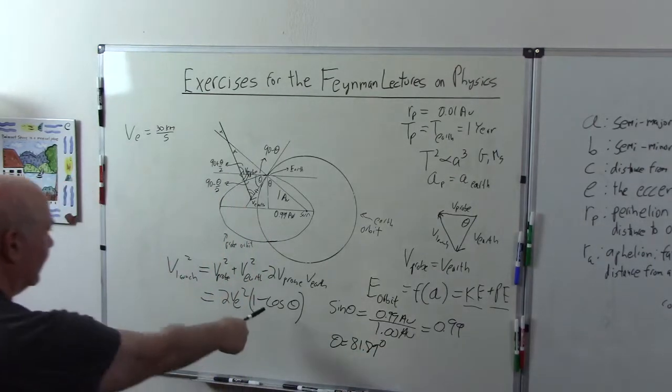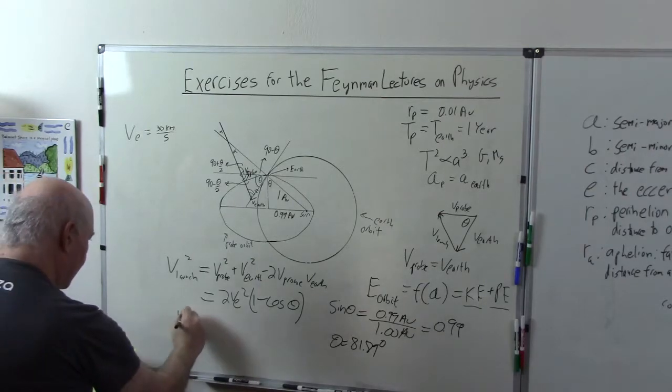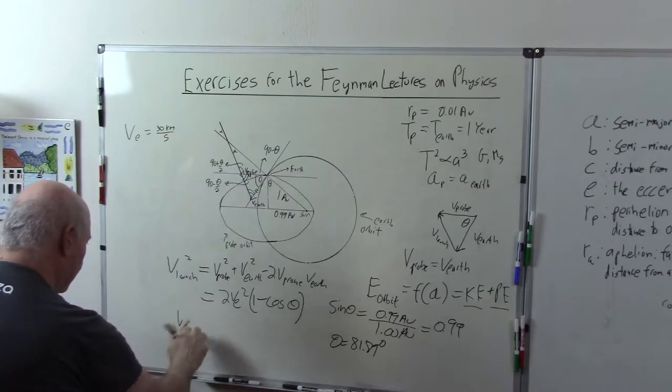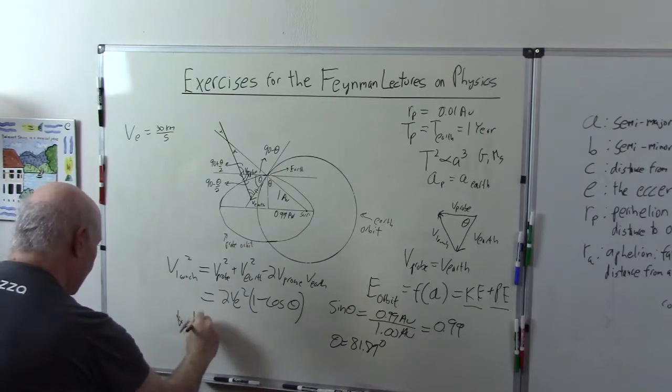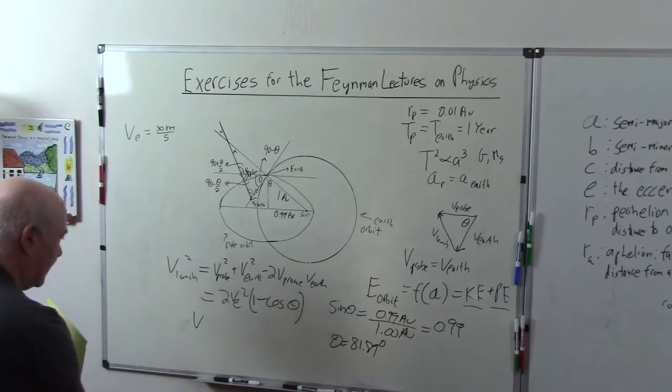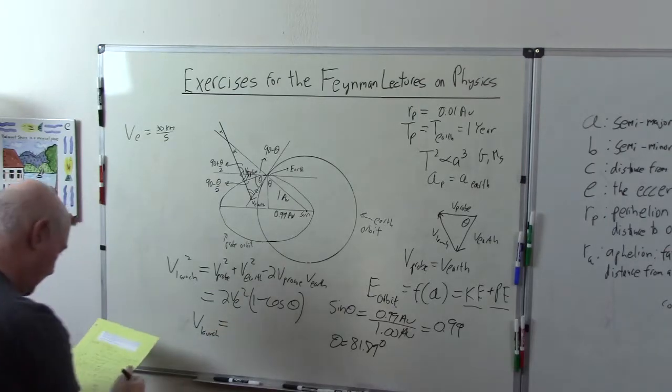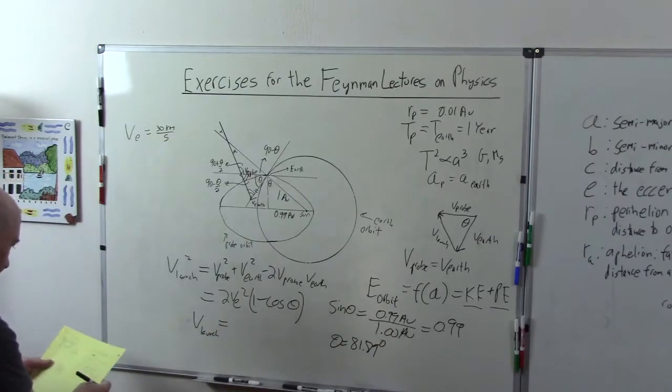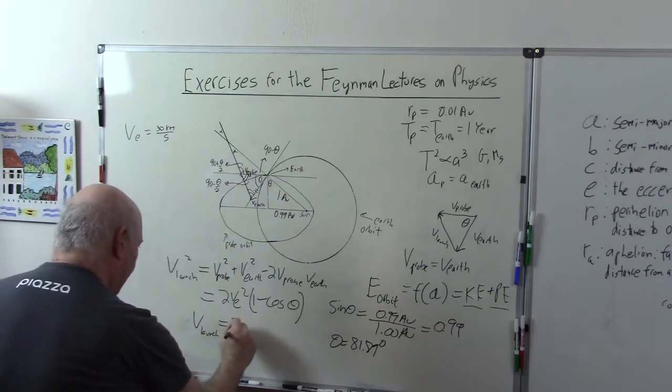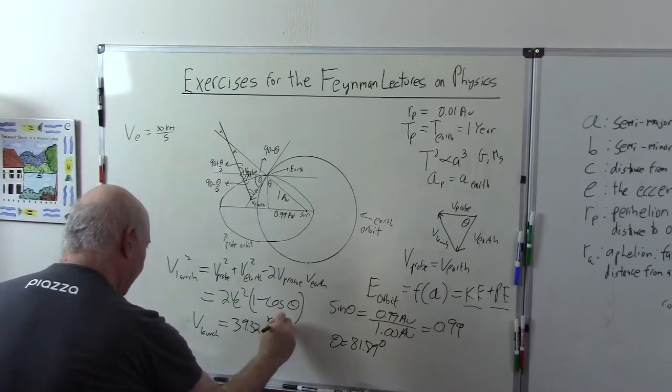Plugging into here, we get that the Vlaunch is equal to 39.32 kilometers per second.